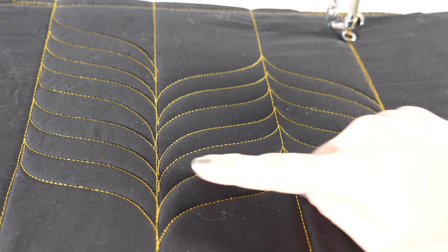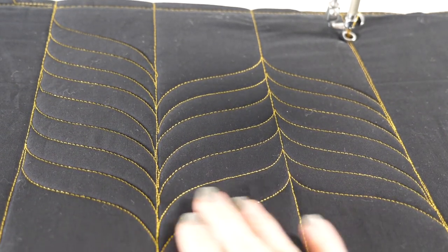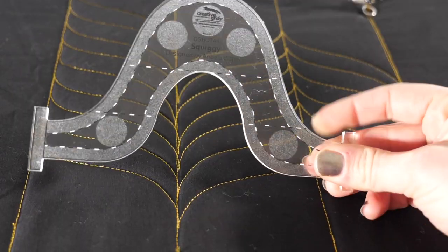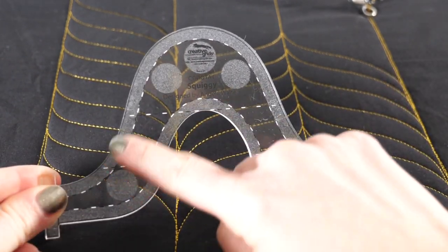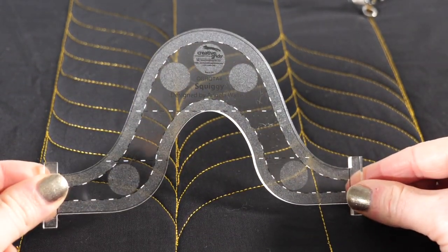I'm just loving how easy it is to go from one direction to the other to quickly quilt those areas. Now, let me show you how you can use Squiggy to quilt long, wavy lines on your whole quilt.